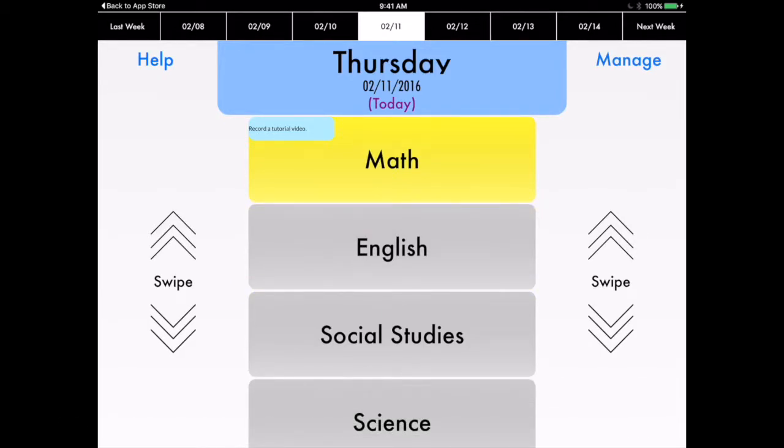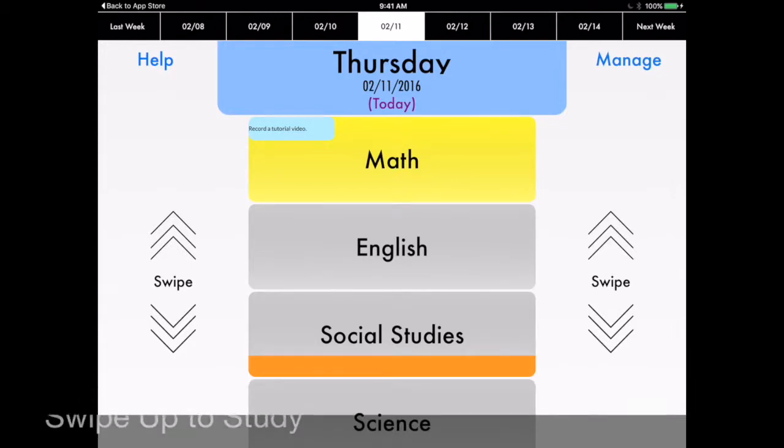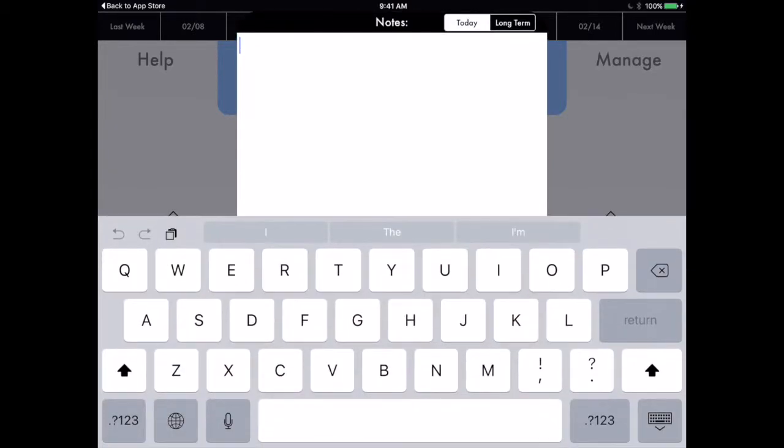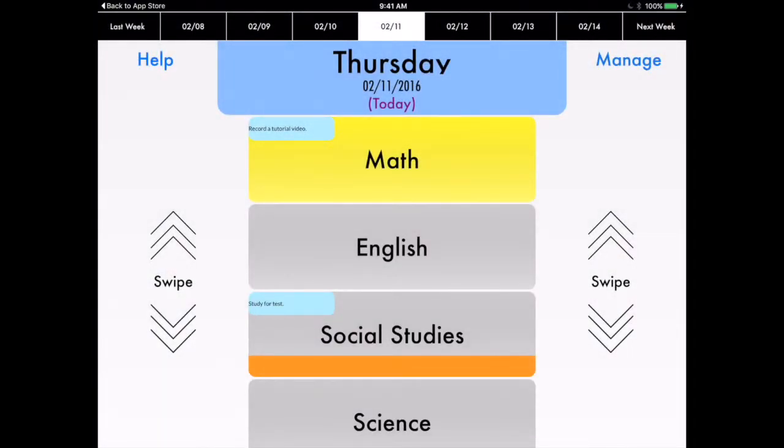All right, social studies. Let's say we've got a test coming up tomorrow and I definitely want to study for it. For studying, all you have to do is swipe up on social studies. And then you see that an orange bar means I need to study. And if you want to add a note, again, just click on it and you can type in study for a test.